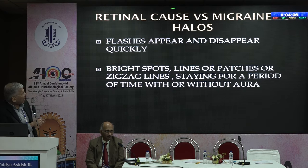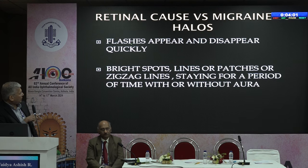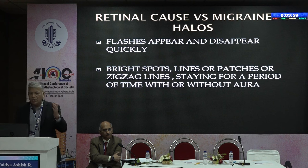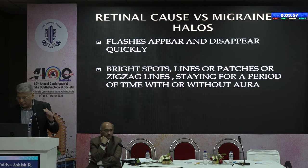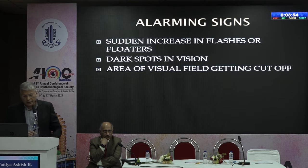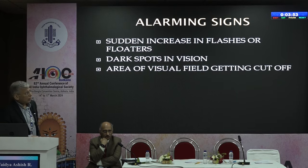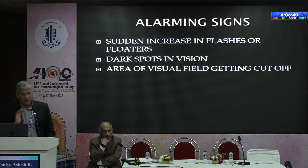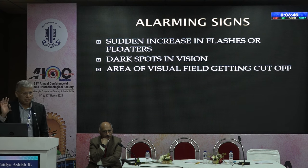To differentiate between retinal cause, migraine and halos: in a retinal cause the flashes appear and disappear quickly. In migraine you have zigzag lines and bright spots that can happen with or without aura, sometimes with a headache. Alarming signs include a sudden increase in flashes and floaters — you must examine these patients immediately.